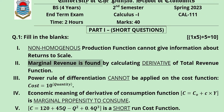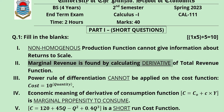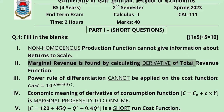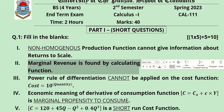Secondly, the marginal revenue is found by calculating the derivative — the total derivative — of the total revenue function. By finding the derivative we can find the marginal revenue of the total revenue function.